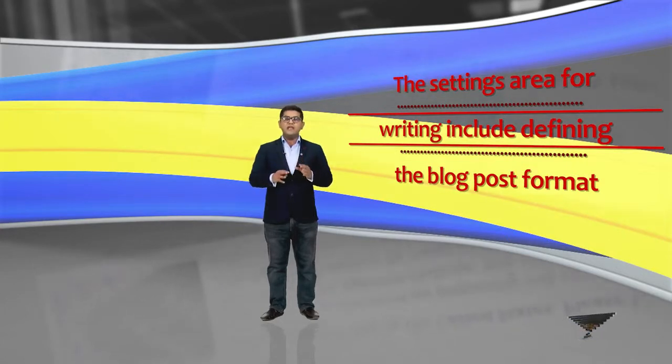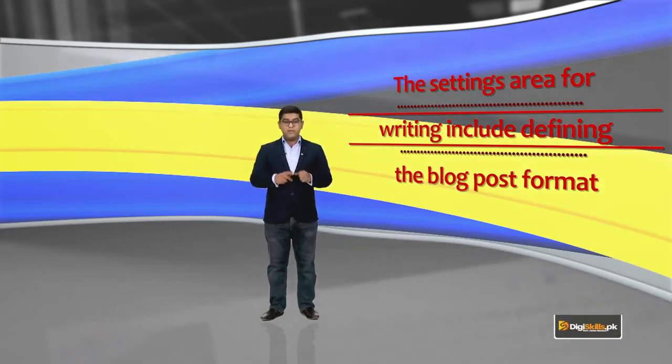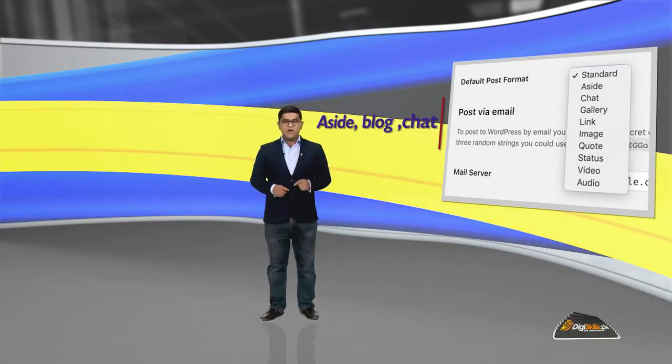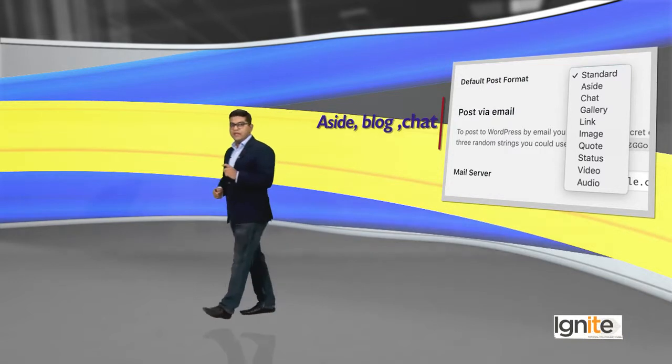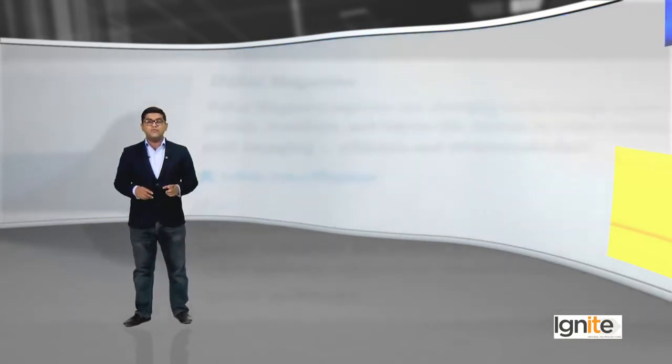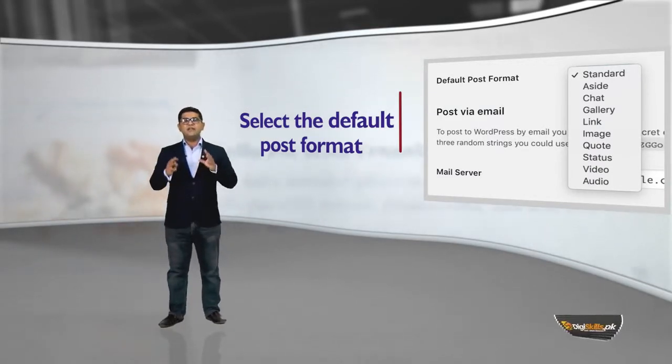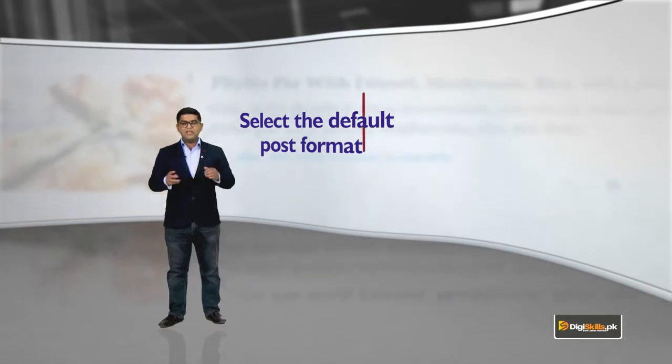The settings area for writing includes defining the default blog post format. It could be different things like a side, blog, or chat — I will tell you about details. This is the area that defines the blog post default format. This also depends on your theme, which will tell you which features are in the blog post. Also, if you have a link manager plugin installed, this will define the default link category. You have an option here to select the default post format very easily.